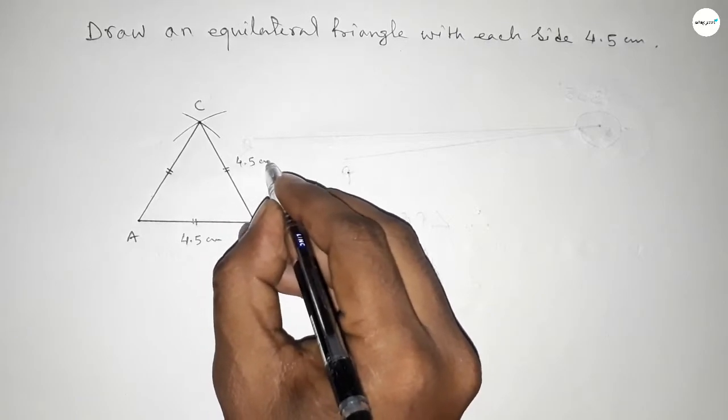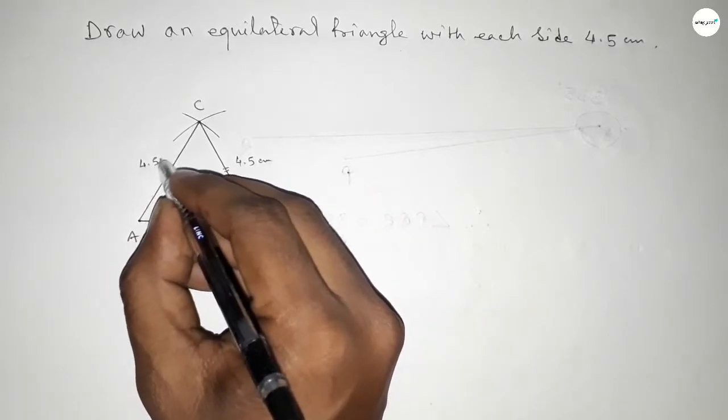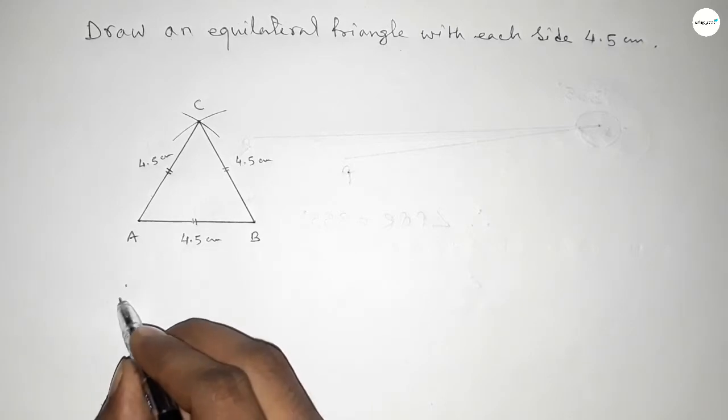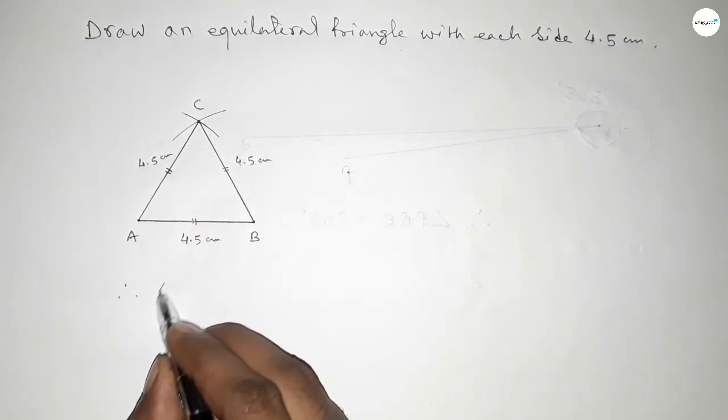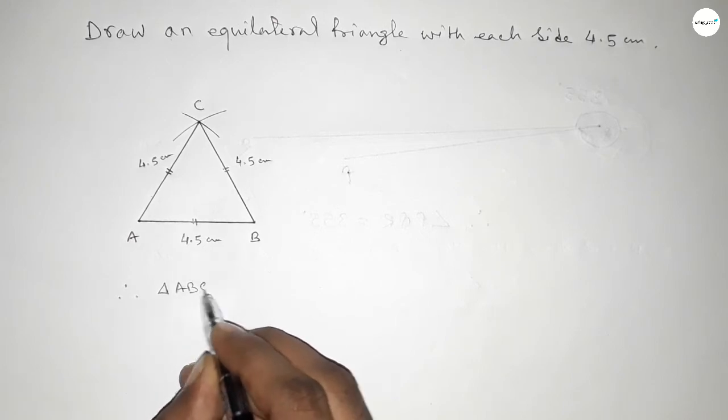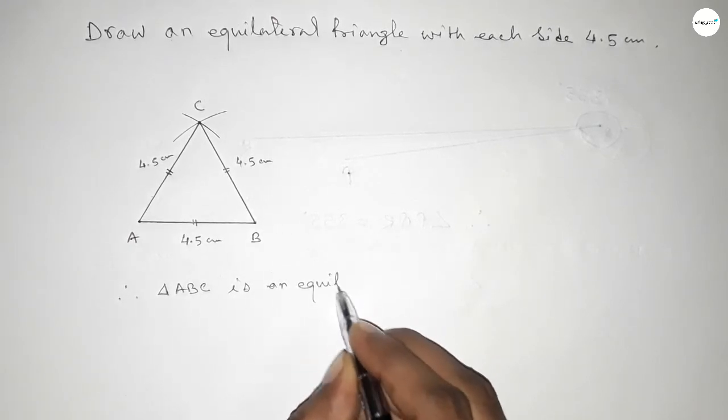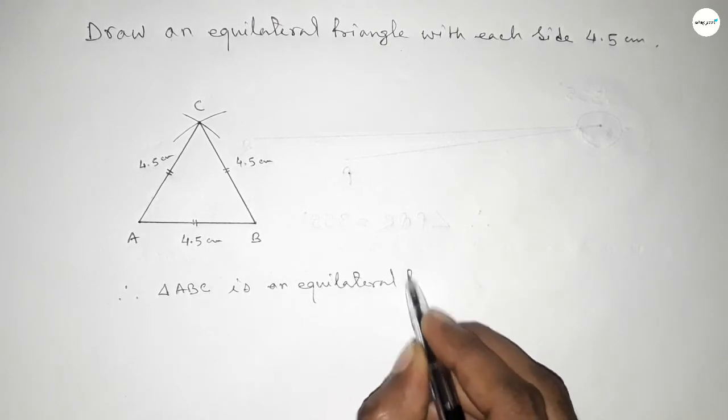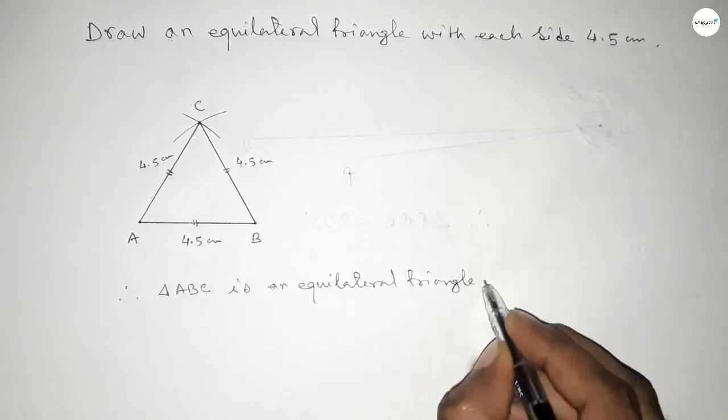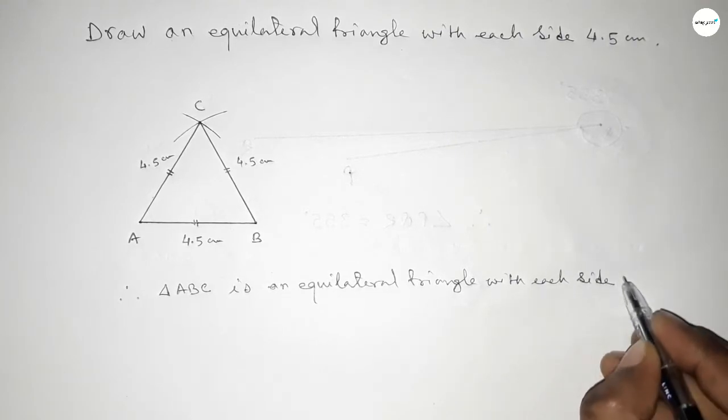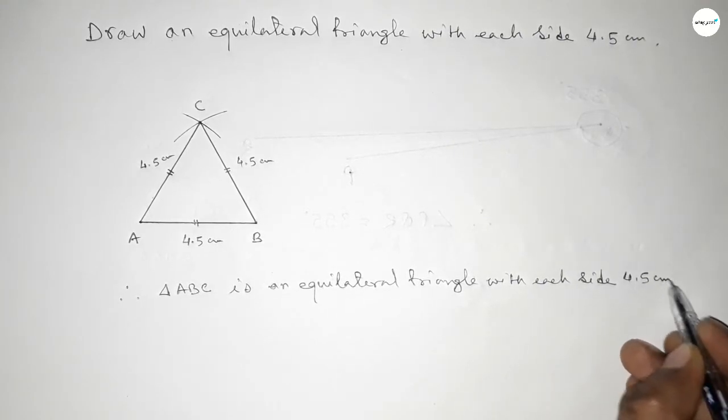Therefore triangle ABC is an equilateral triangle with each side 4.5 centimeters. So by this way we can construct an equilateral triangle with each side 4.5 centimeters.